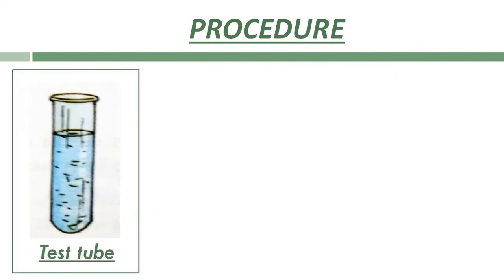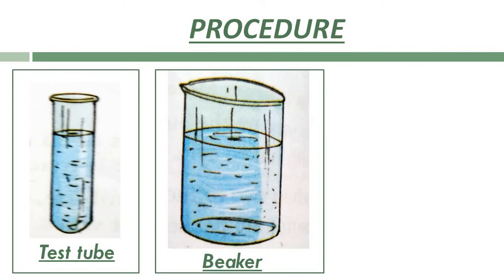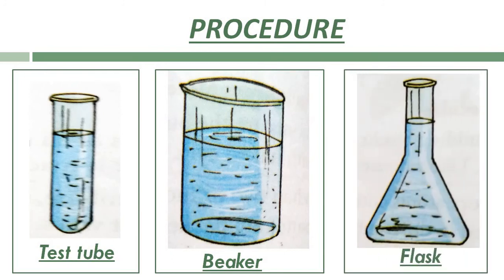Let's start this activity. First, take some water in a test tube and note its shape. Now pour this water into the beaker and observe its shape. Now pour it into a jar or flask and observe its shape. You will see that when water is filled in the test tube it takes the shape of the test tube, when filled in the beaker it takes the shape of the beaker, and when poured into the flask it takes the shape of the flask.